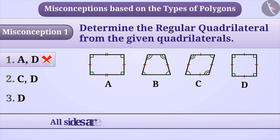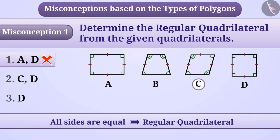Some children think that if all the sides of a quadrilateral are equal, then it is a regular quadrilateral. They say that among the given figures, in figure C and figure D, all the sides are equal, so they consider them as regular quadrilaterals and give the answer as option 2, but this is also an incorrect answer.